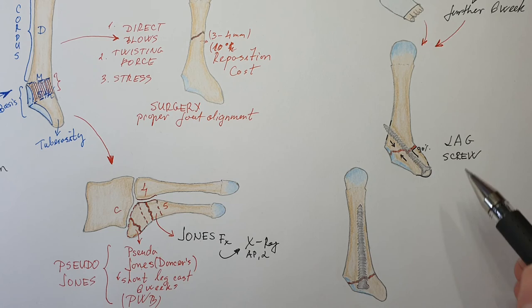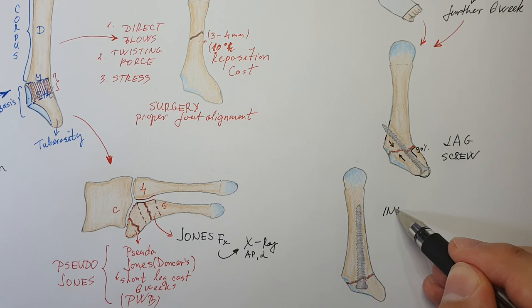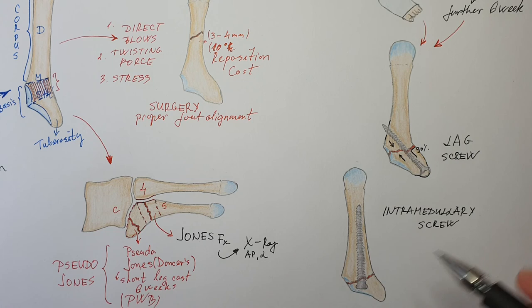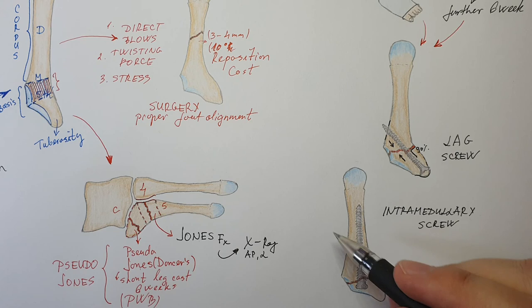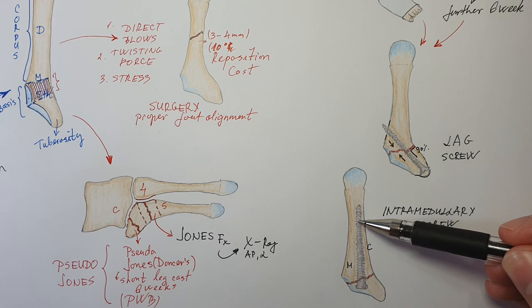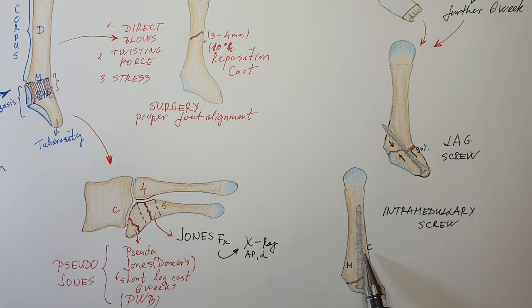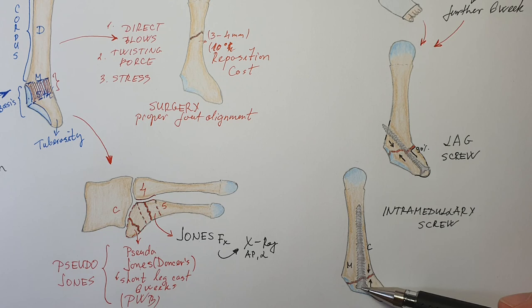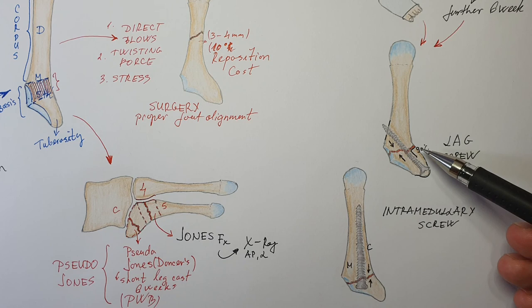The second possibility is the intramedullary screw. This screw is inserted into the medulla of the bone — we have the compact bone (the cortex) and the medulla (the spongy bone). The diameter of the screw is important; it needs to be the right size to compact and achieve interfragmentary compression. It is also important that the parts behind and in front of the fracture line are the same length. Treating this fracture this way has high rates of success.